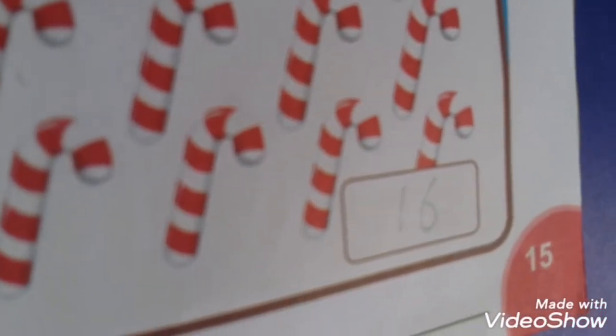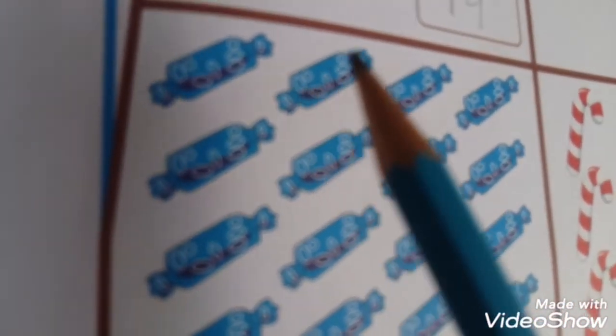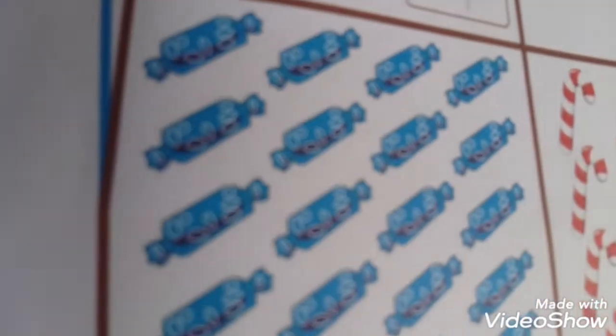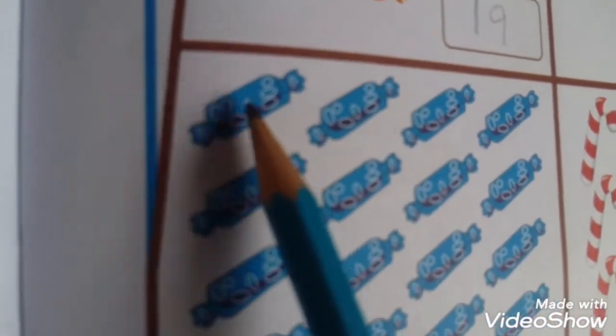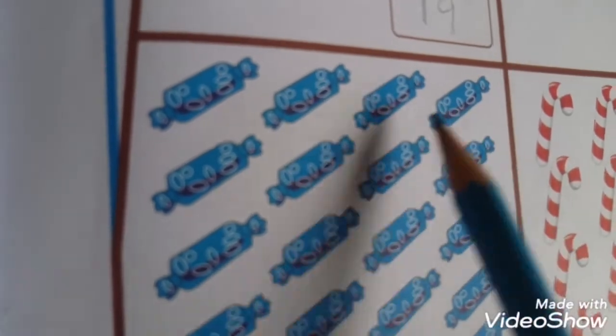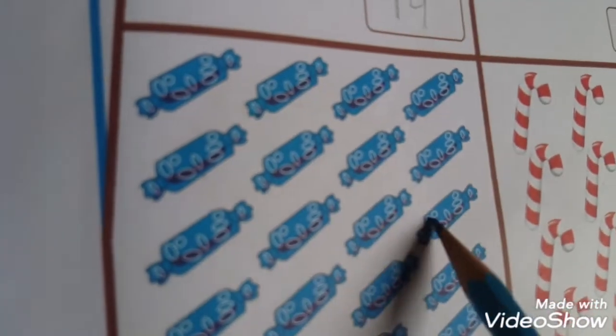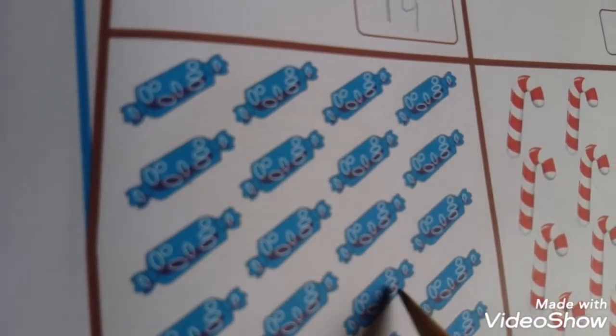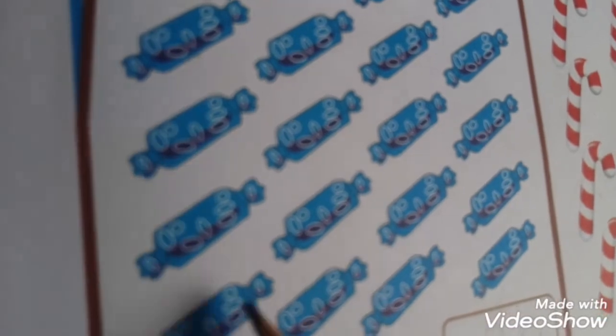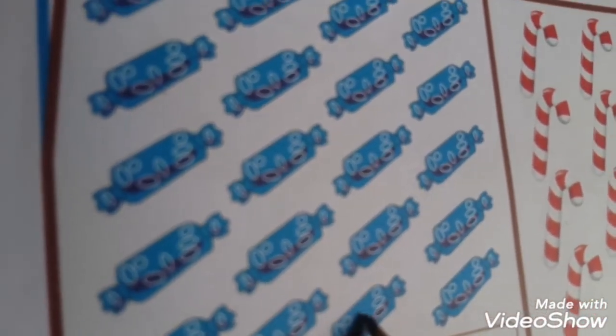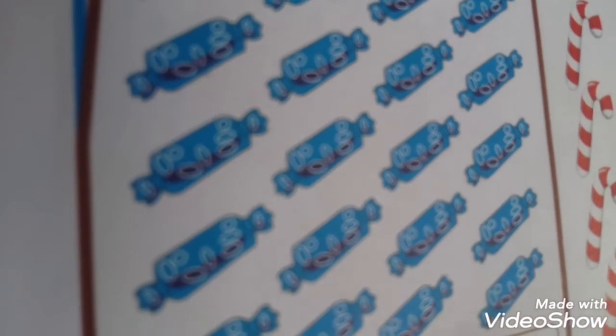How many are these? 16 sweets. Now come to the left side. In blue color, these sweets - count these sweets and write the correct number in the box. One, two, three, four, five, six, seven, eight, nine, ten, eleven, twelve, thirteen, fourteen, fifteen, sixteen, seventeen, eighteen, nineteen, and twenty. You write: two, zero - 20 in this box.